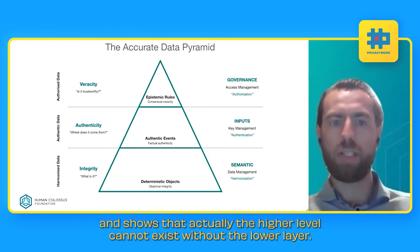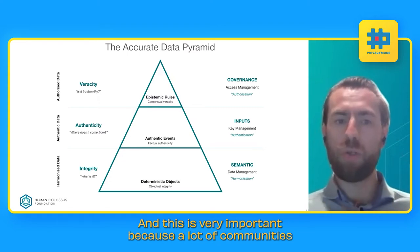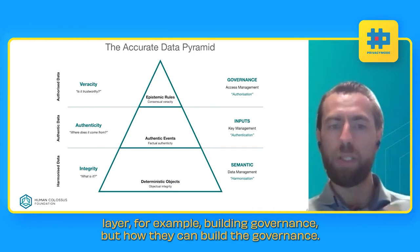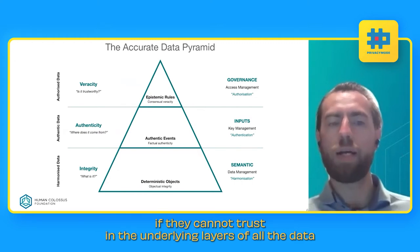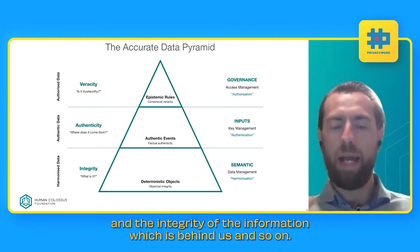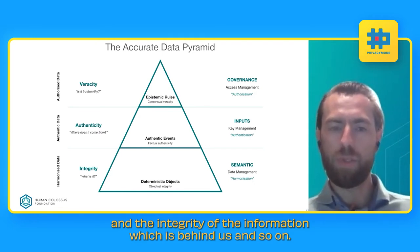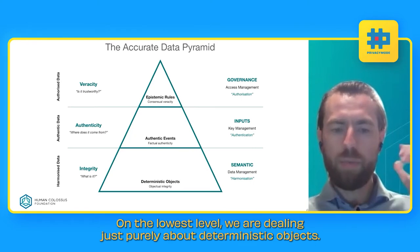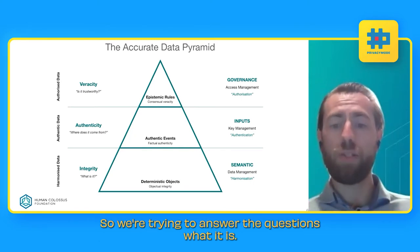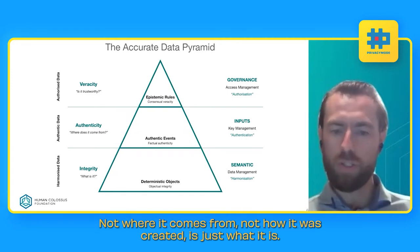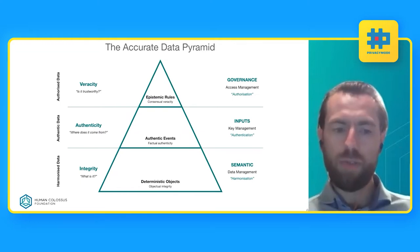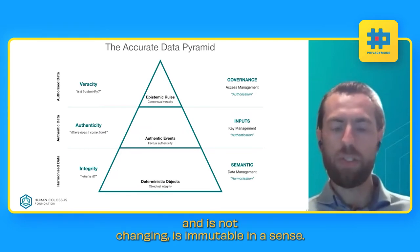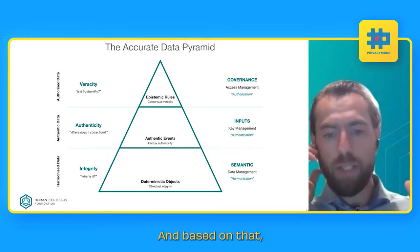The accurate data pyramid shows the interdependency of layers and demonstrates that higher layers cannot exist without the lower layers. This is very important because many communities try to build solutions addressing just one layer — for example, building governance — but how can you build governance if you can't trust the underlying layers about data integrity? At the lowest layer we deal purely with deterministic objects: we answer what it is, not where it comes from or how it was created. This allows you to reason about the integrity of information — that it is persistent, not changing, immutable in a sense.